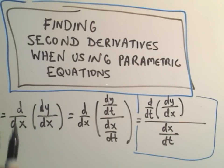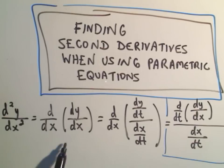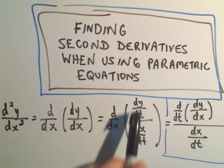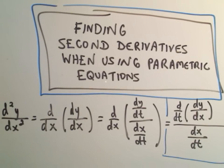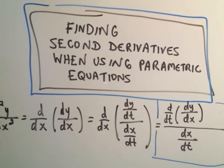And remember what that means is we're taking the derivative with respect to x of dy dx. And we can rewrite that as, we know dy dx is dy dt over dx dt. We saw that in a different video. And you can rearrange that to get d dt of dy dx over dx dt.